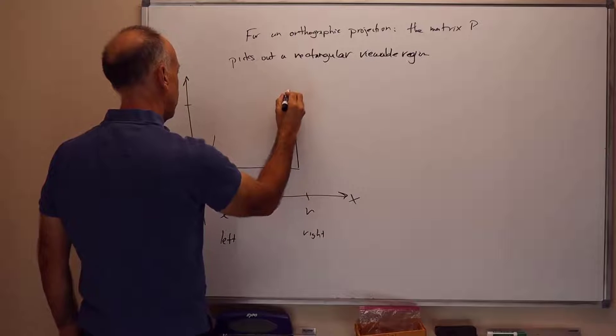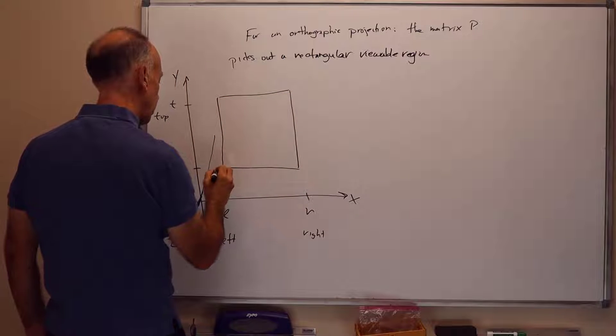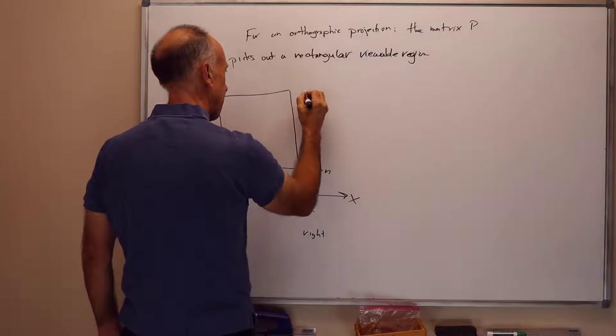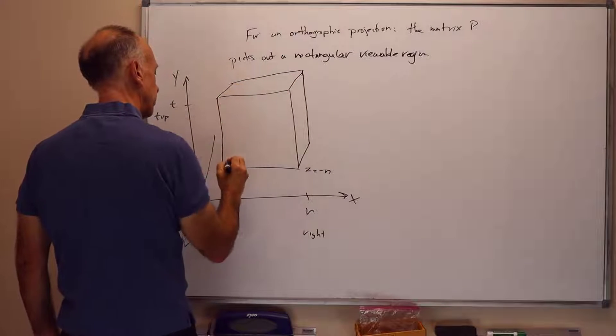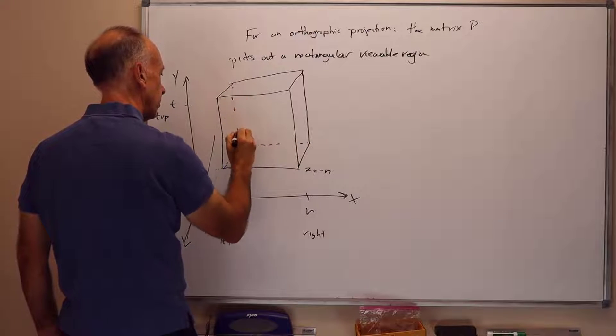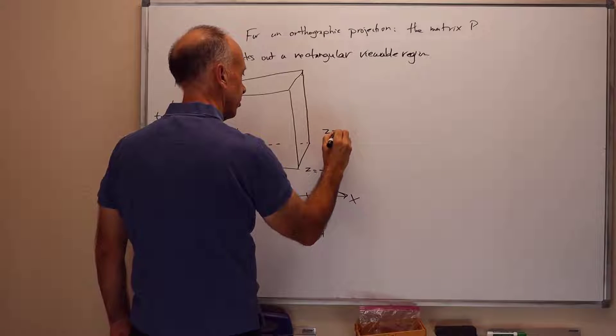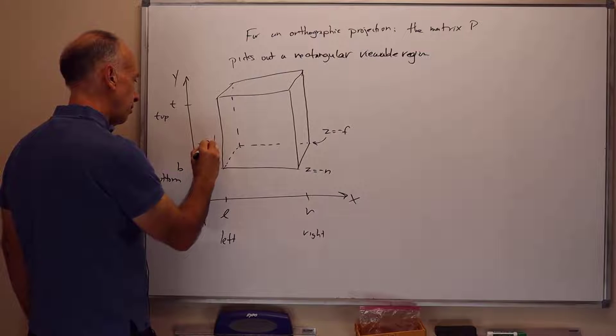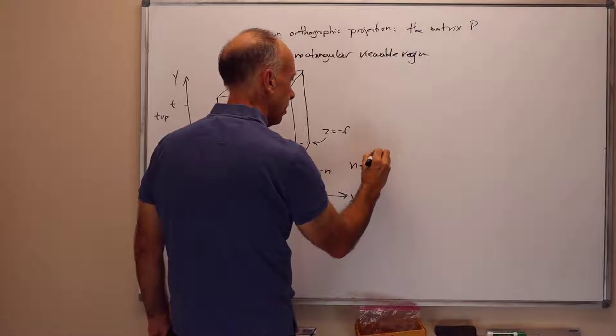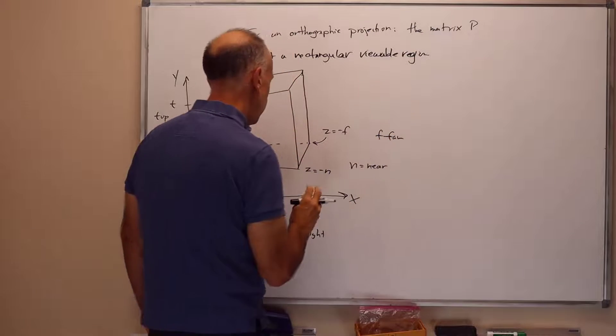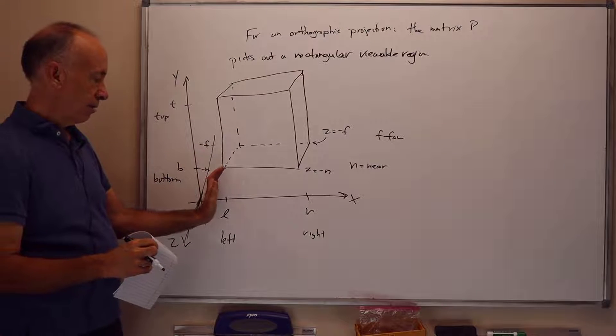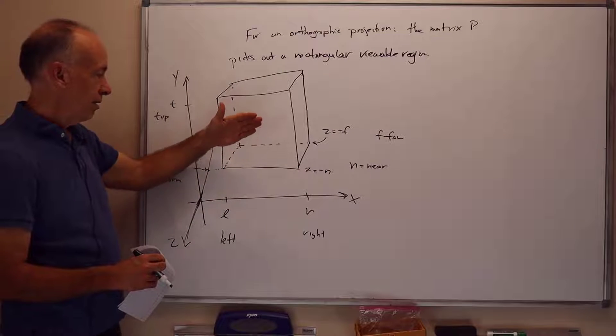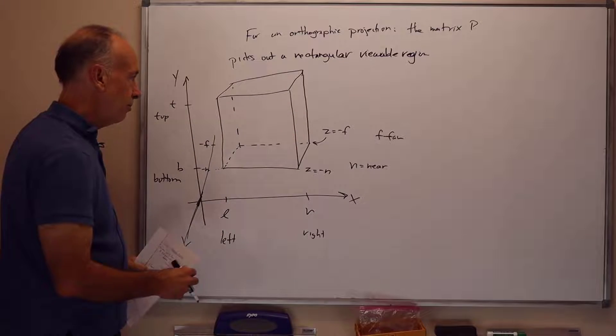And we get a, this defines a front of a cube. And the cube starts at, this is at z equals minus n. And the back of the cube is at z equals minus f, here. And so, this is minus n, minus f. And n stands for near, and f stands for far. So I've got this rectangular region in space. It goes from x goes from L to R, Y goes from B to T.